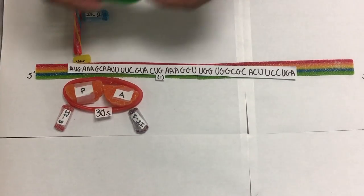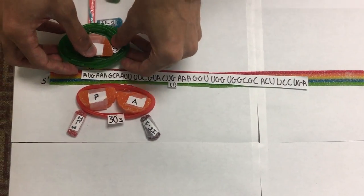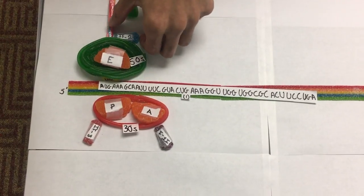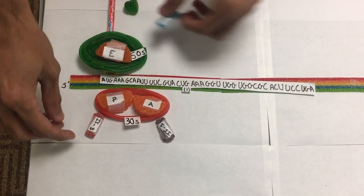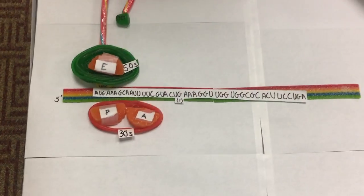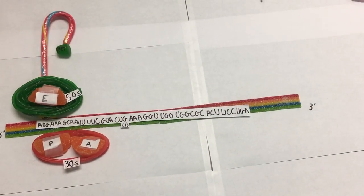And lastly, the complex binds to the 50S subunit and the GTP, which is bound on IF2, gets hydrolyzed and all three of the initiation factors leave. And this completes the formation of the initiation complex.